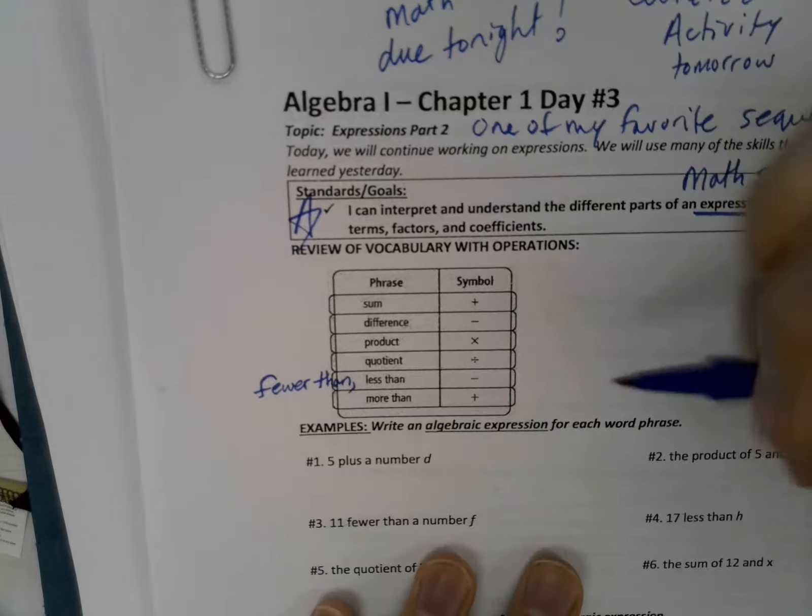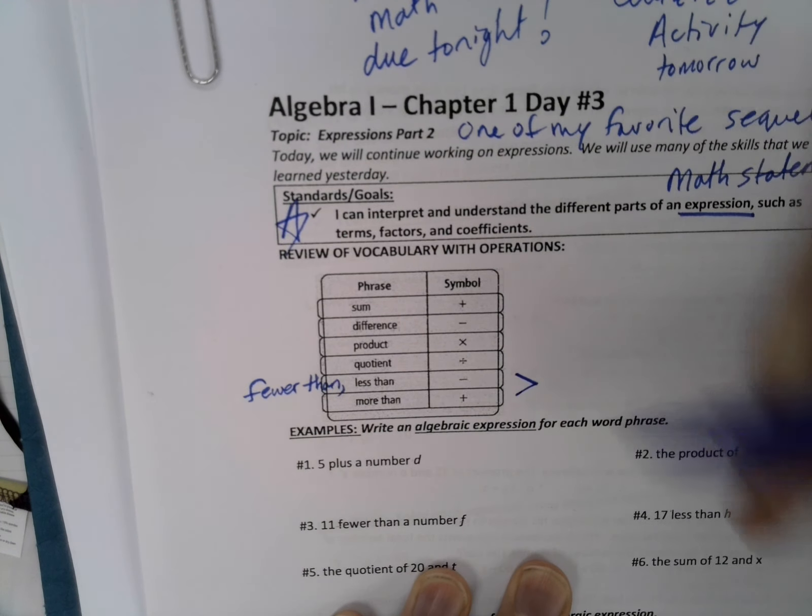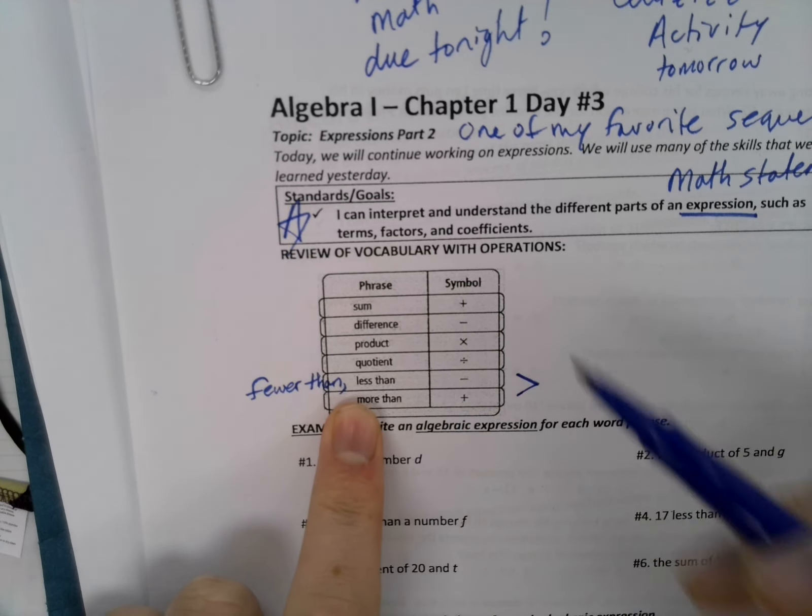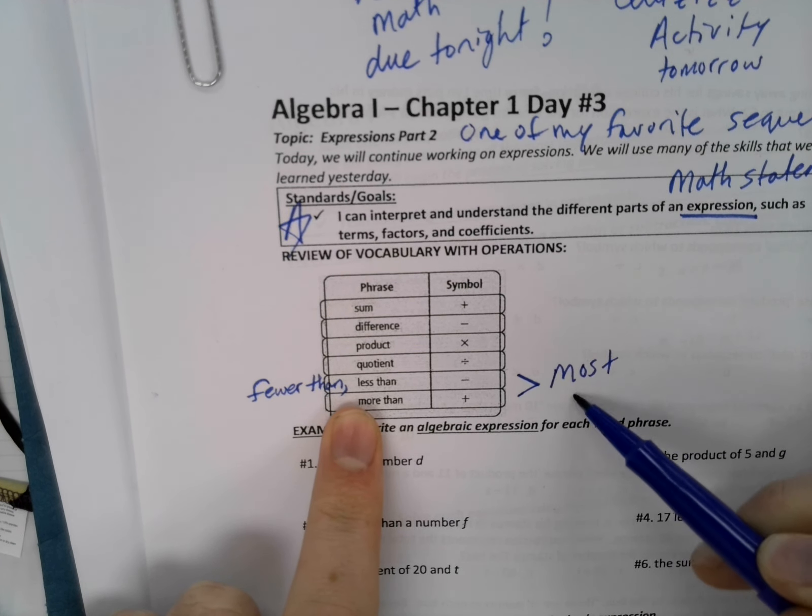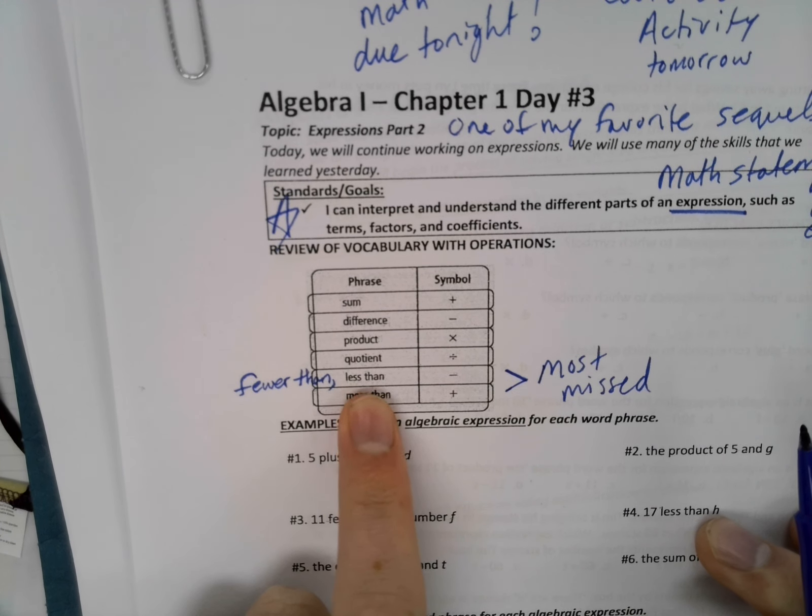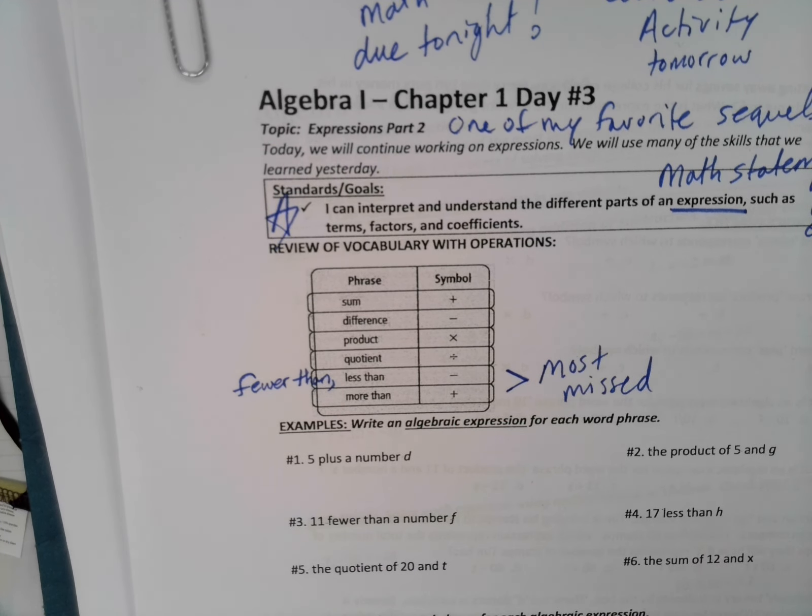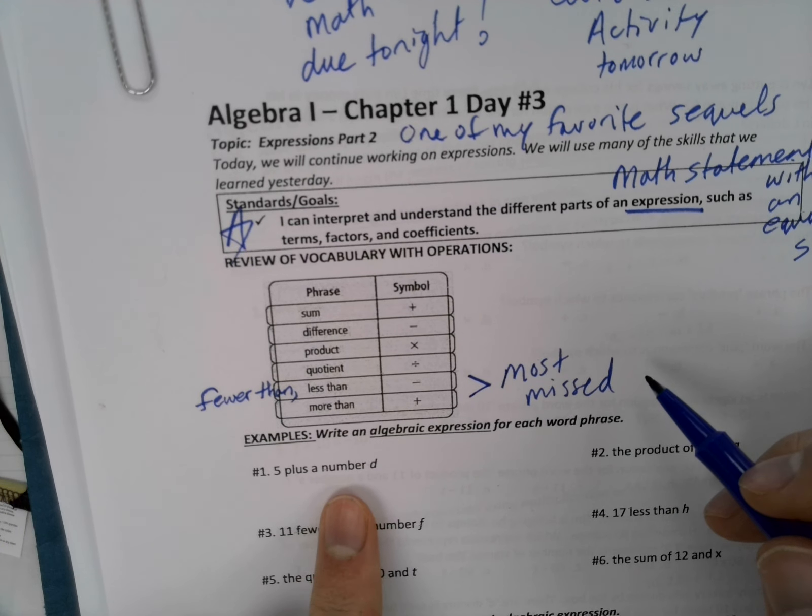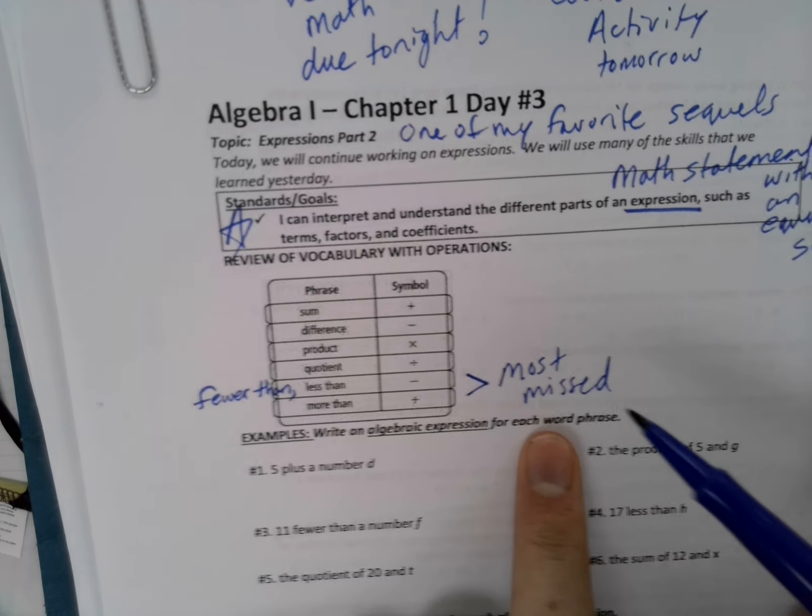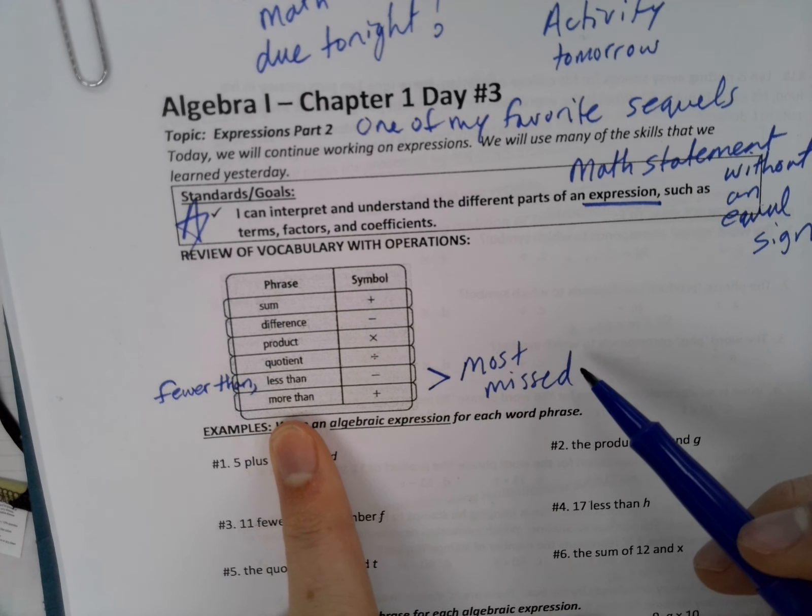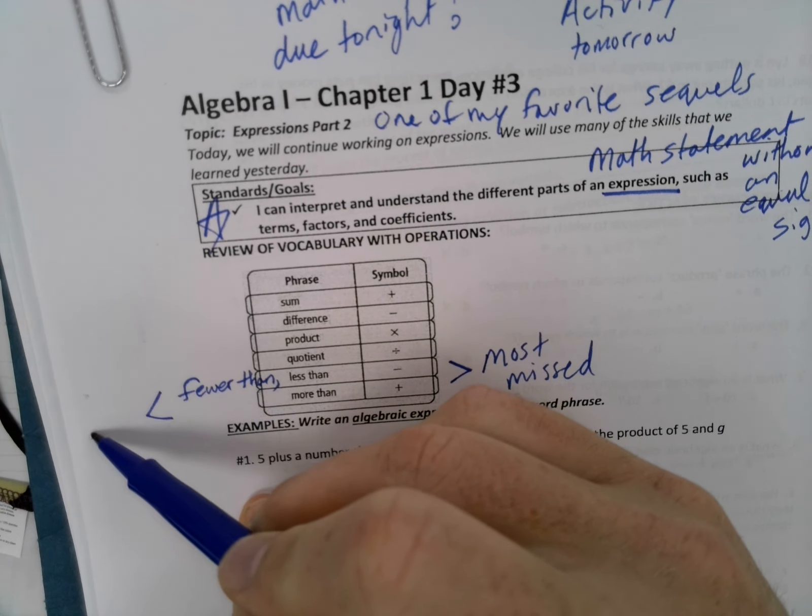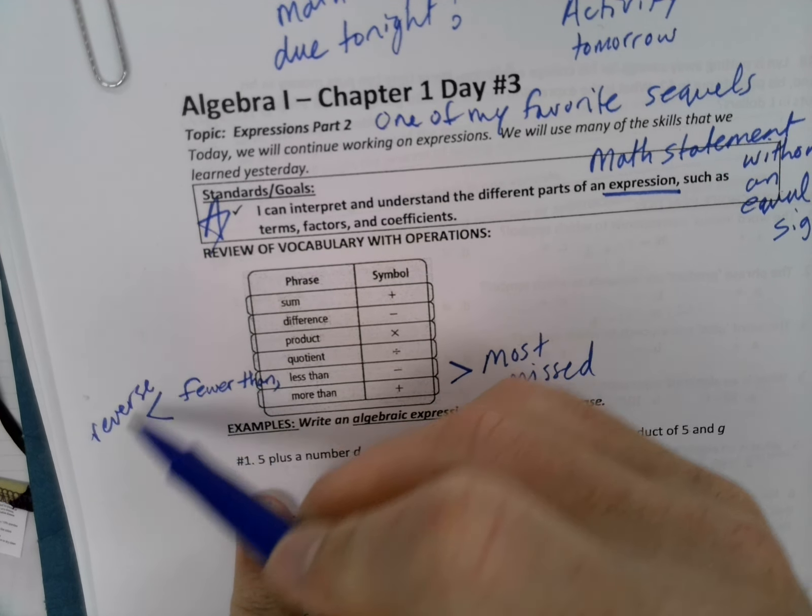I want to remind you that a lot of students will make the mistakes, if they are going to make them, on these two right here. These are the most missed. So fewer than, less than, and more than. And remember, the reason is because a lot of times, pretty much every time you use these words, the expression is being presented in reverse. So remember, these two right here, reverse order.